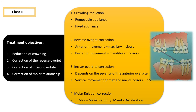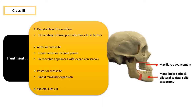The treatment objectives for Class 3 malocclusion include reduction of crowding, correction of reverse overjet, correction of incisor overbite, and correction of molar relationship. These can be achieved by removable or fixed appliance therapy. Reverse overjet correction is achieved by anterior movement of maxillary incisors and posterior movement of mandibular incisors. Molar relationship can be corrected by mesialization of maxillary molars and distalization of mandibular molars.